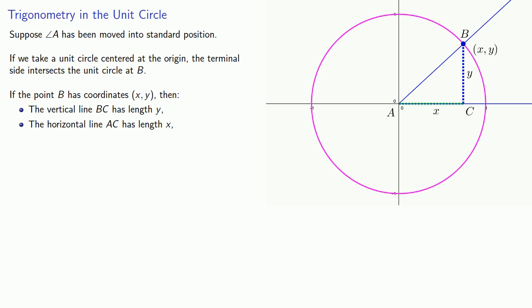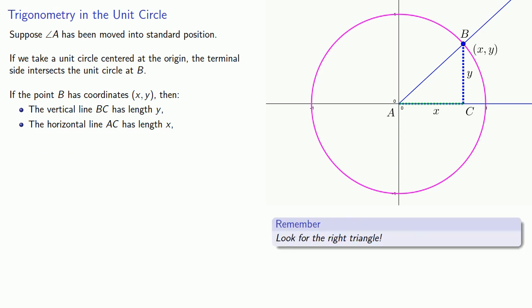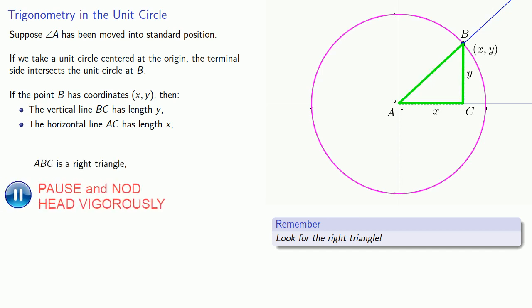A useful rule in mathematics is: look for the right triangle. Since BC is vertical, that means that this angle BCA is a right angle, and so ABC is a right triangle.